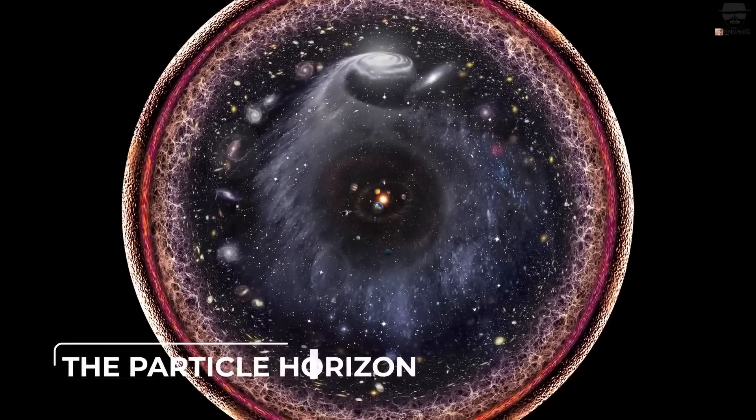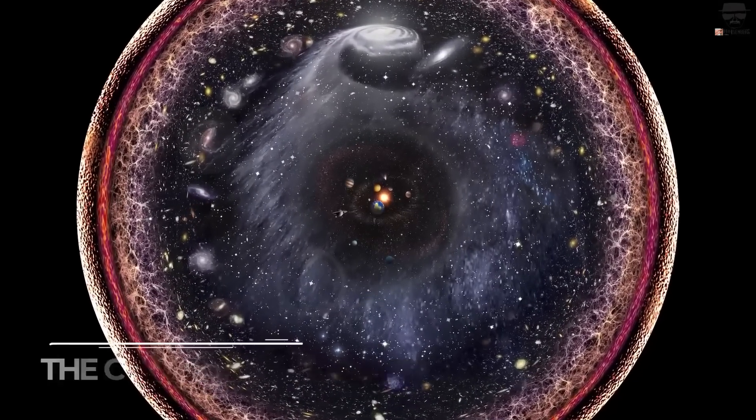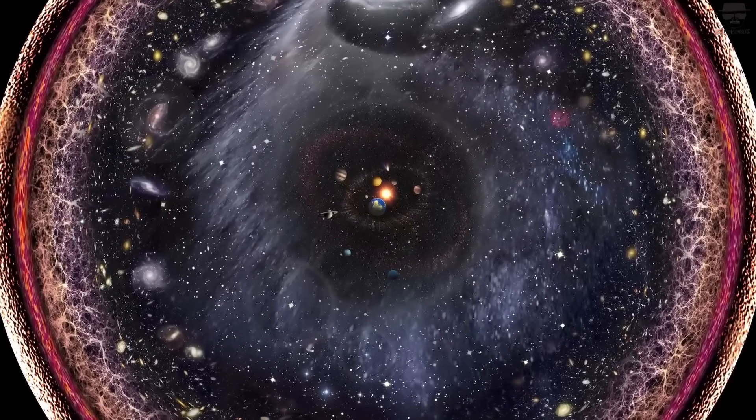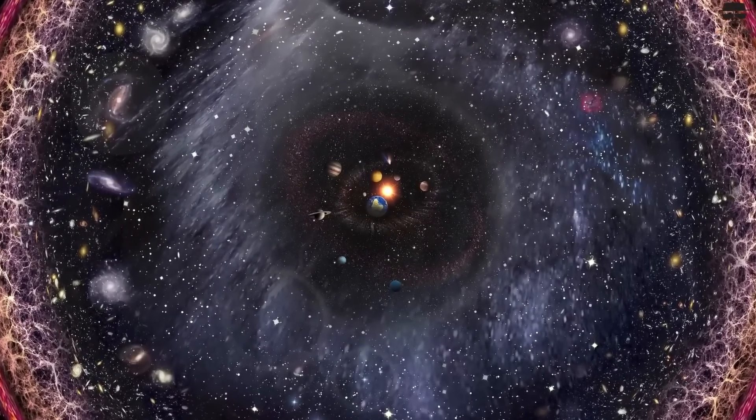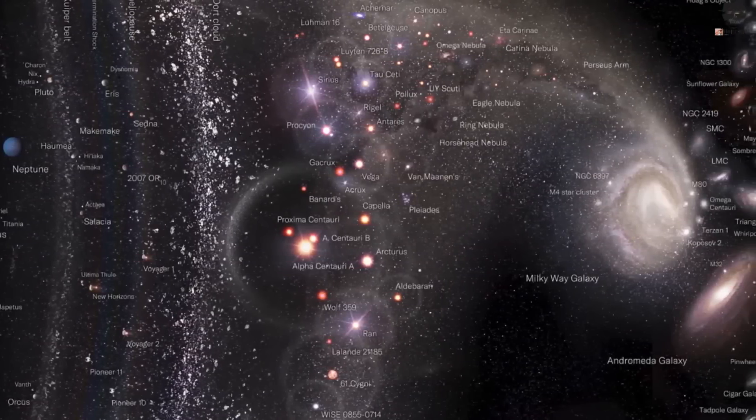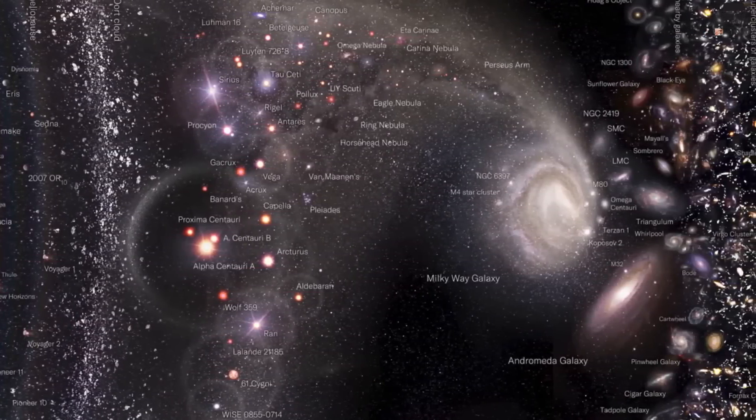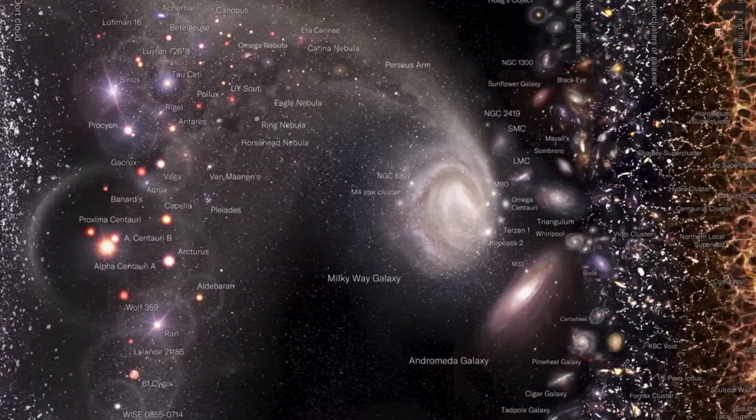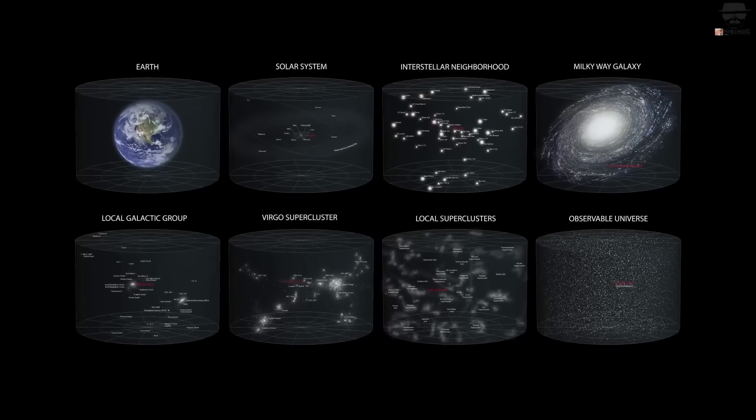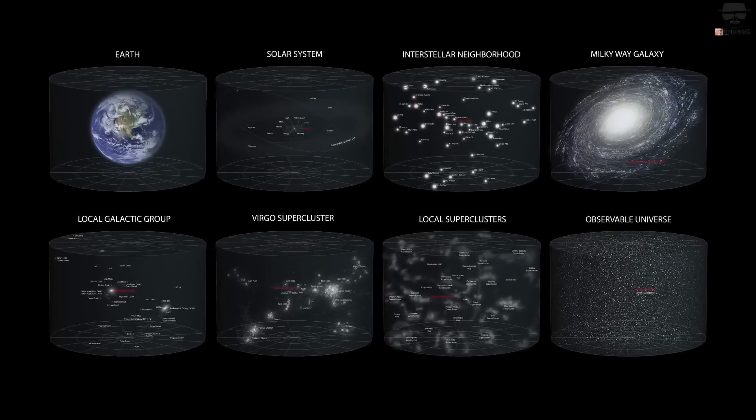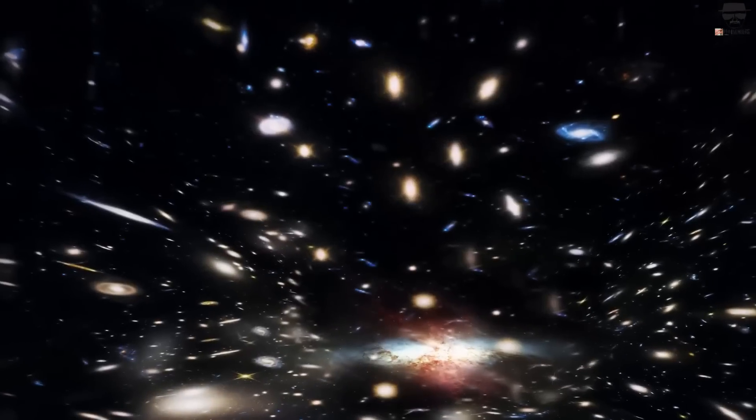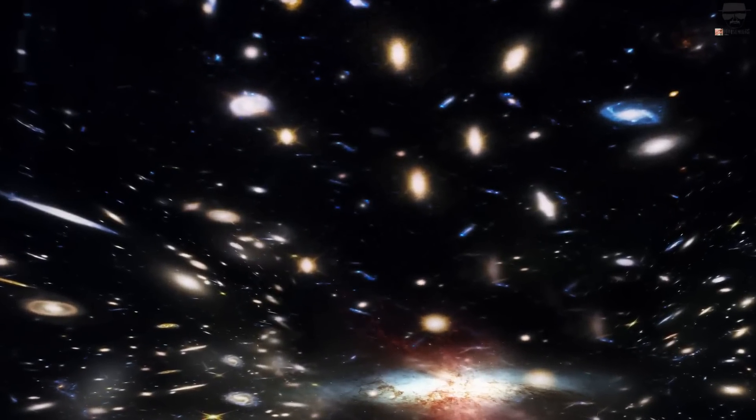The particle horizon, also called the cosmological horizon or the cosmic light horizon, is the maximum distance from which light from particles could have traveled to the observer in the age of the universe. It represents the boundary between the observable and the unobservable regions of the universe. So its distance at the present epoch defines the size of the observable universe. Due to the expansion of the universe, it is not simply the age of the universe times the speed of light, as in the Hubble horizon, but rather the speed of light multiplied by the conformal time.